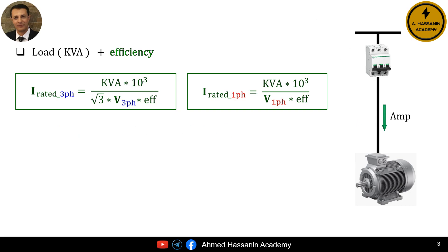The first load unit is the load value in KVA. For dynamic load calculations such as those for motors, we must also consider the motor's efficiency to ensure accurate calculations. For a three-phase dynamic load or three-phase motor, the equation for the rated current of the motor load is the rated power value in KVA multiplied by 10 cubed, divided by the square root of 3, the three-phase rated voltage in volts, and the motor's efficiency.